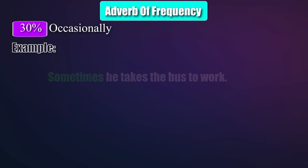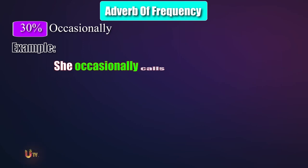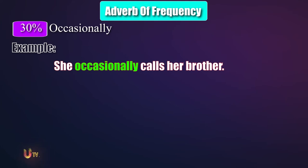Moving to another example: she occasionally calls her brother, which happens from time to time, or now and then. That represents the 30% repetition of an action.